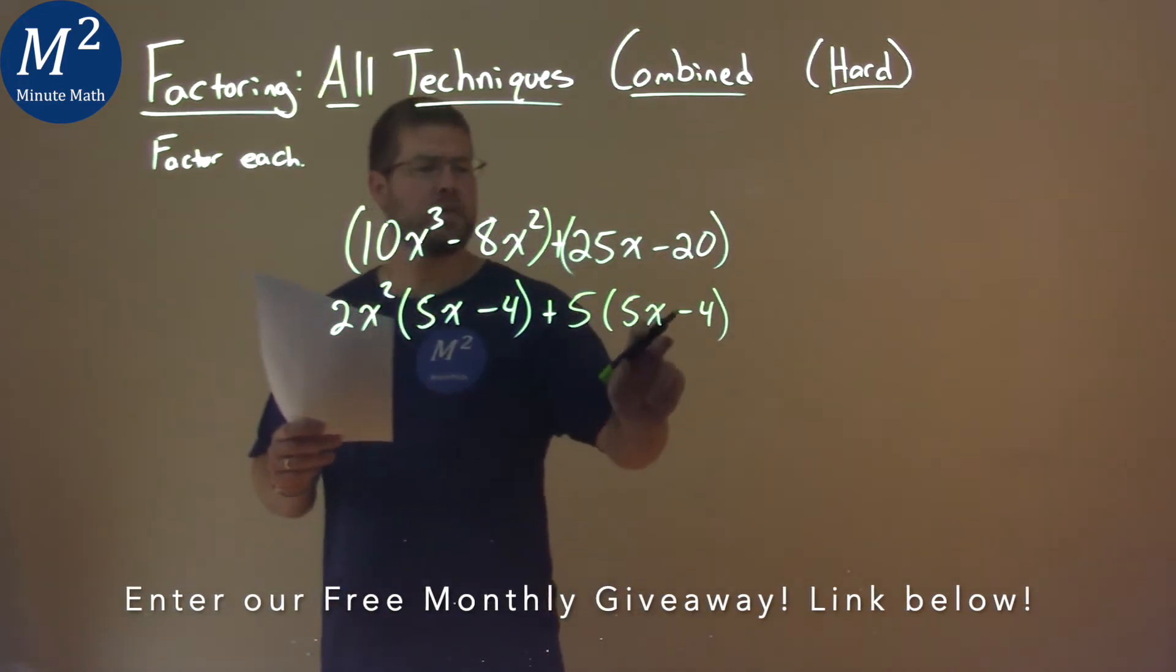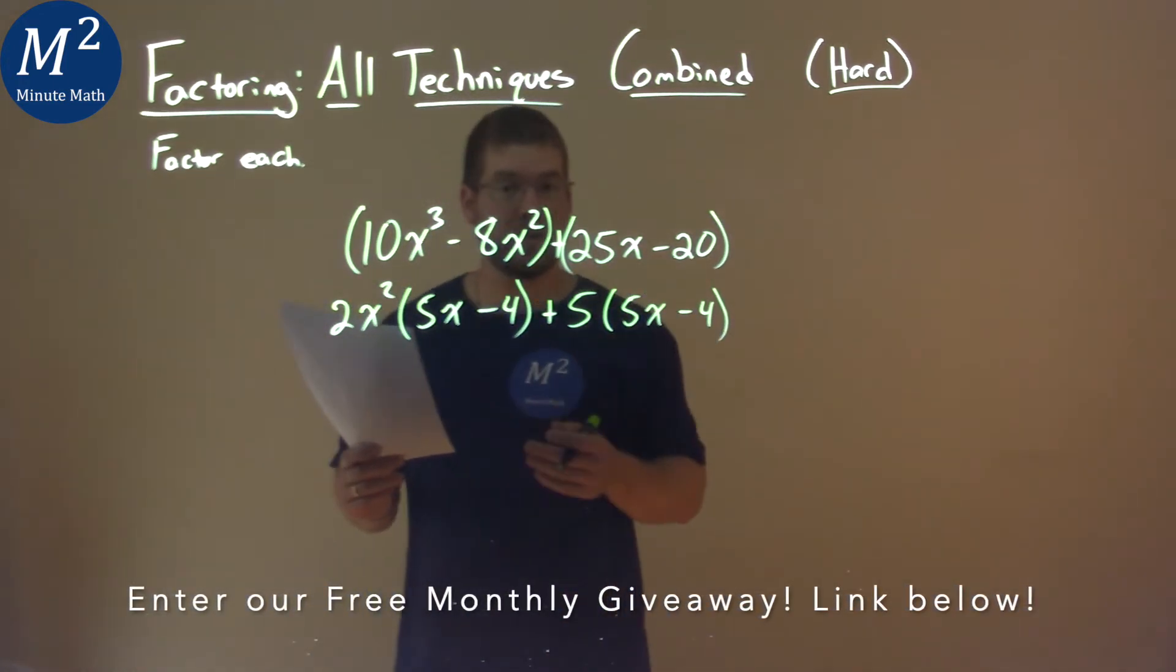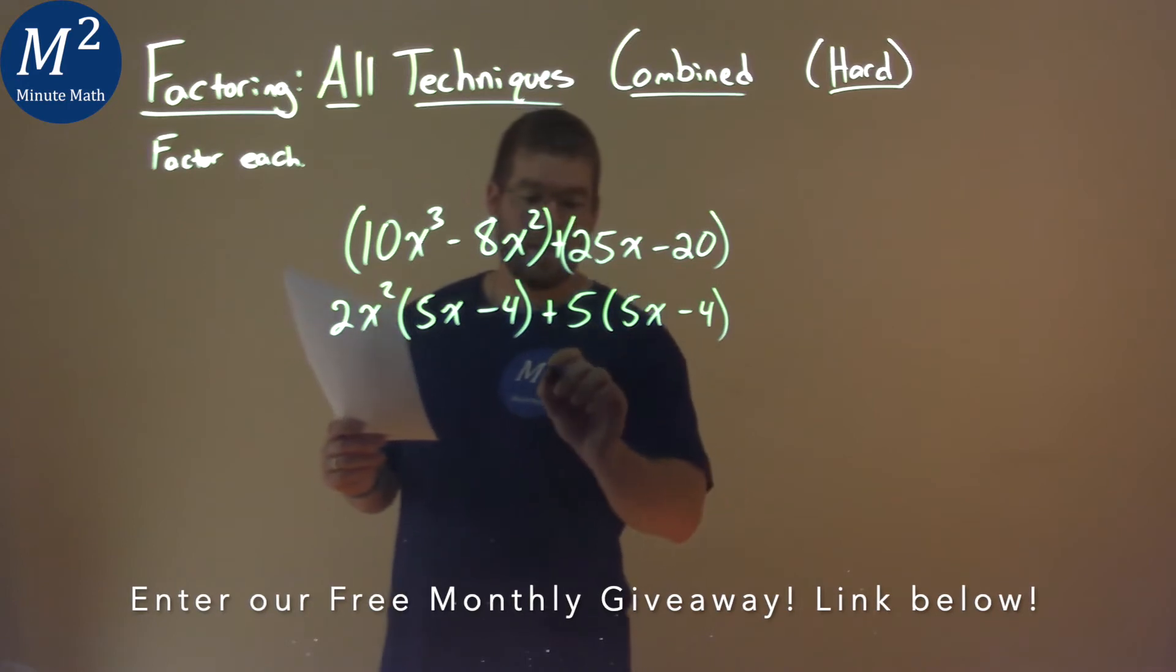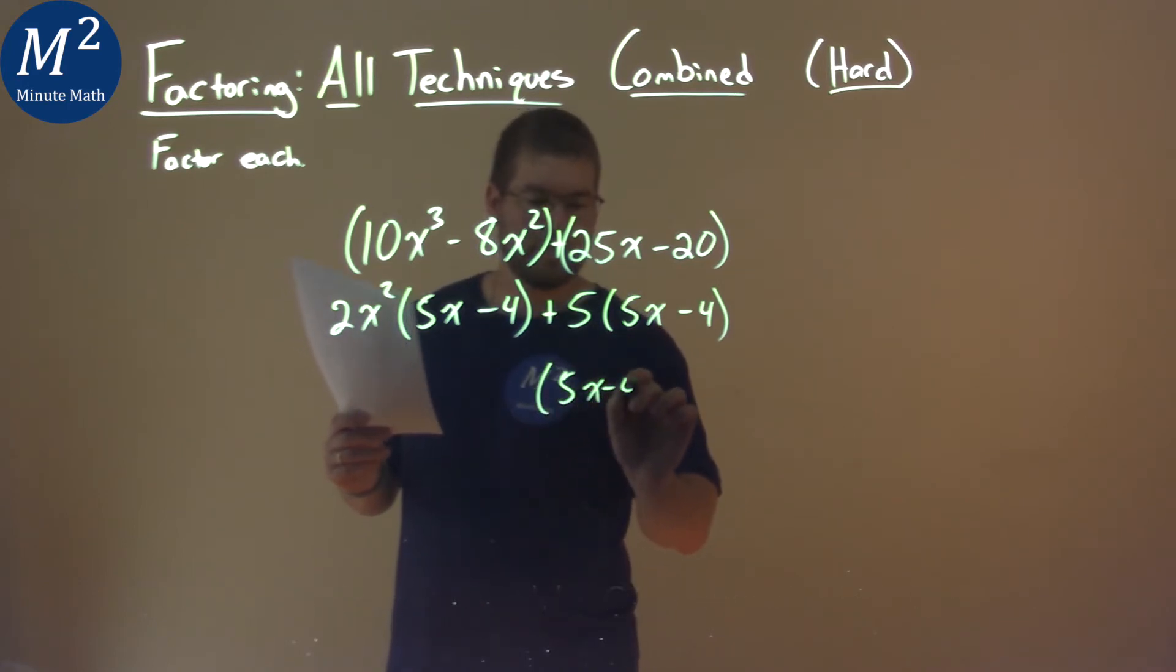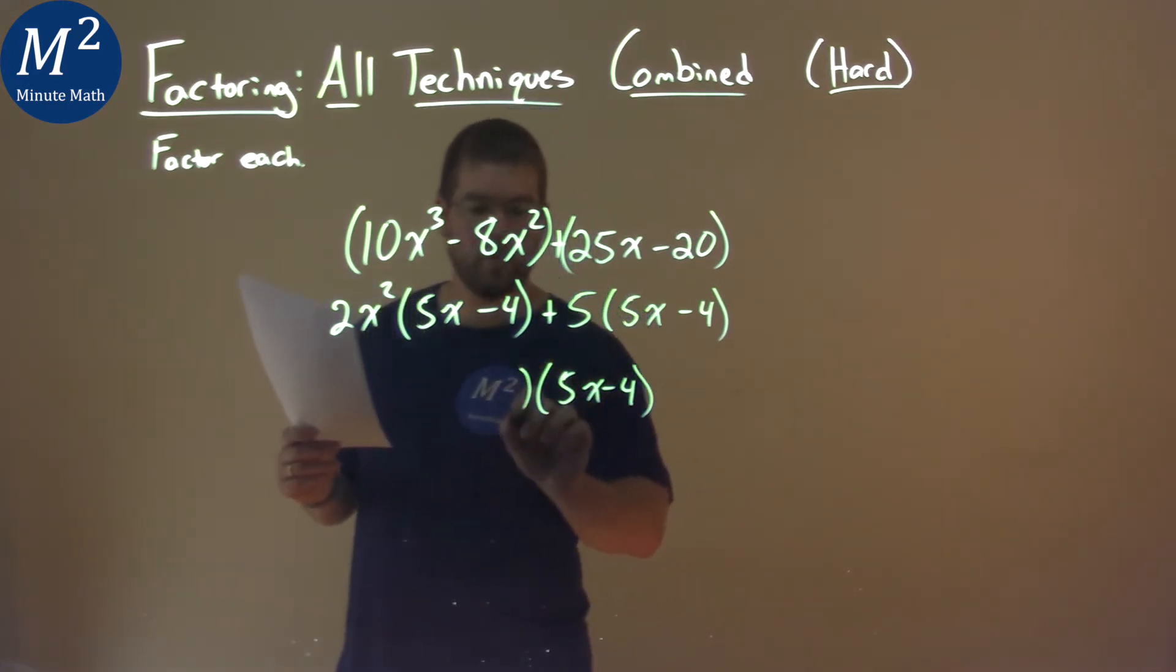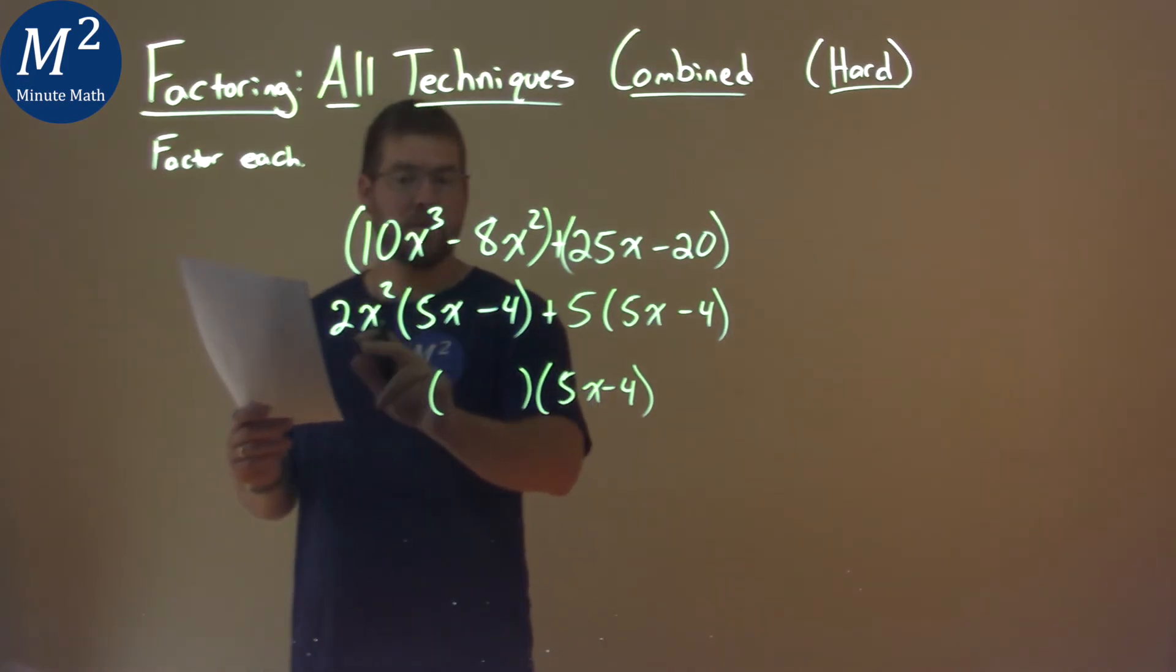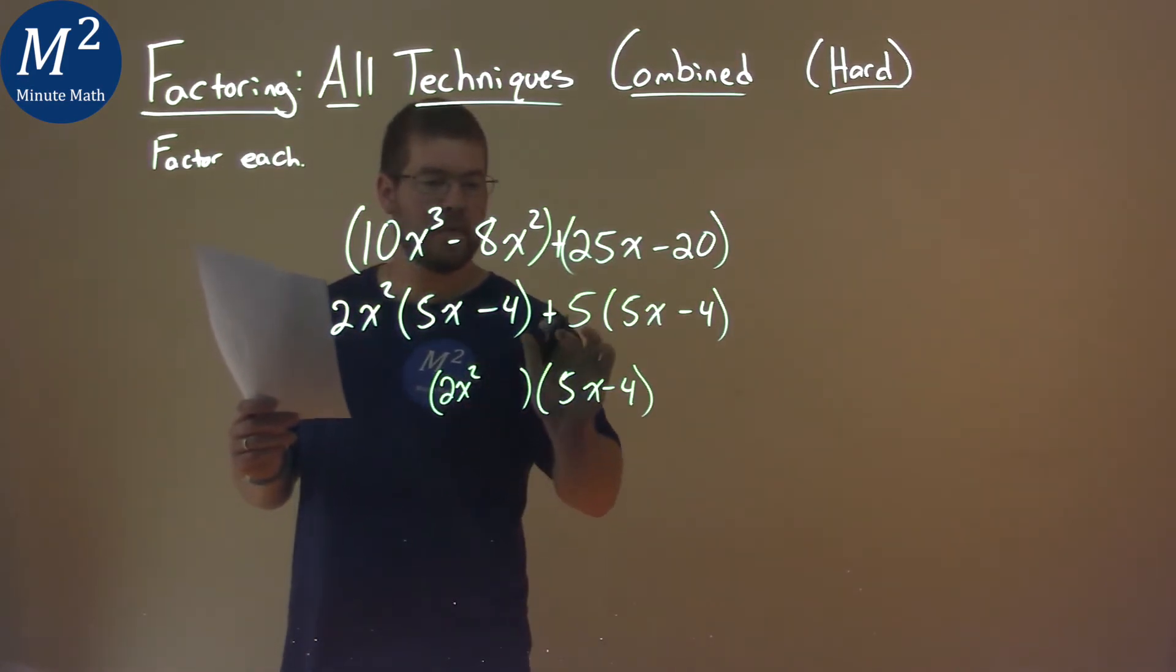Now 5x minus 4, 5x minus 4, you should see the repetition. We pull that out right there from both parts. We're left with what's in front of each one. 2x squared and then plus a 5.